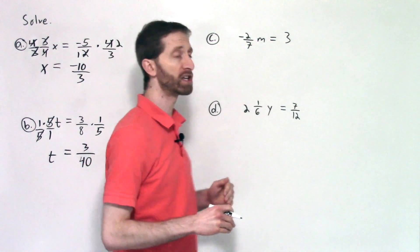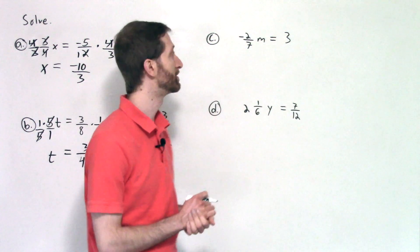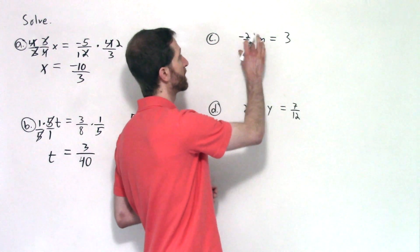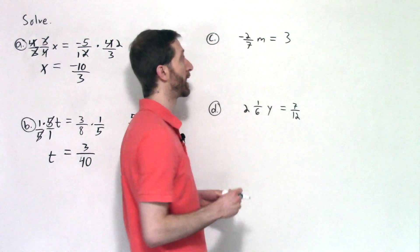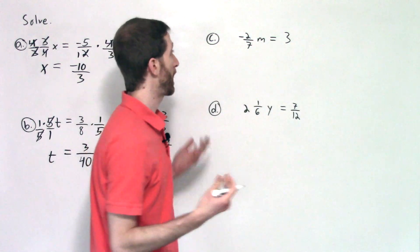Two more examples for you, just in case you need them. There are a couple of different types of setups here. Here we've got a fraction negative two-sevenths times m equal to an integer. So how do we deal with that?